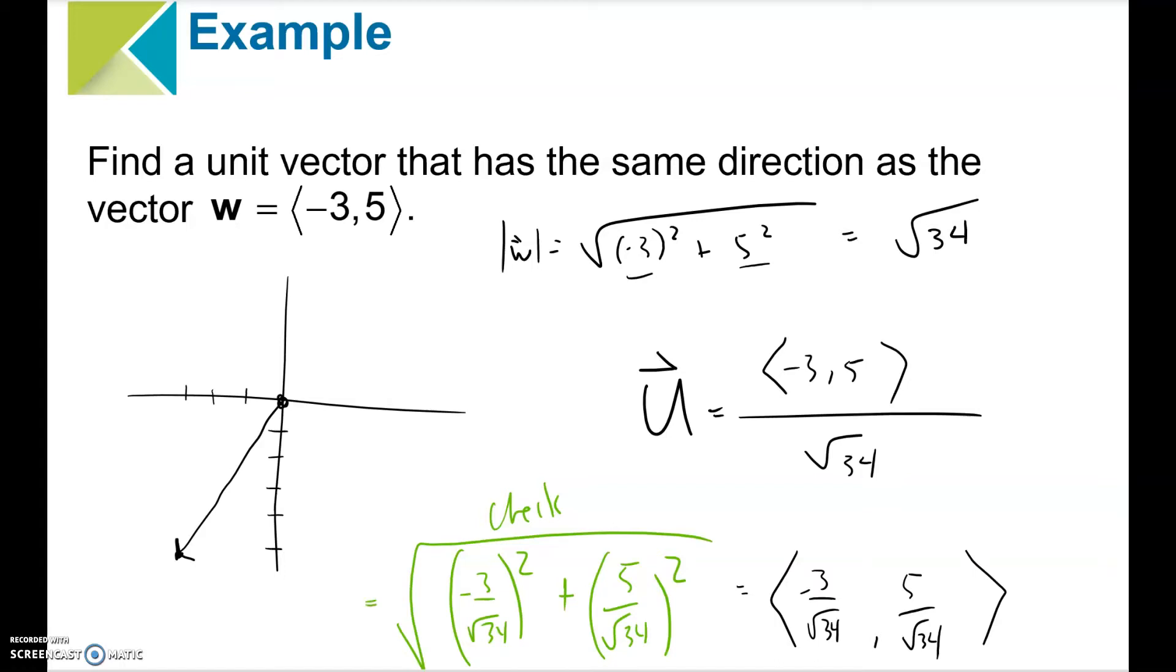So that means 3 squared is 9, root 34 squared is 34. Same thing here, 25 over 34. And sure enough, 9 plus 25 is 34, 34 over 34 is 1. So this is correct. This is the unit vector in the same direction as W, because all we did was multiply by a scalar that was positive, so it doesn't change the direction. So if I wanted to graph U, it would look something like that. It's the same direction, but just has magnitude 1. That's it.